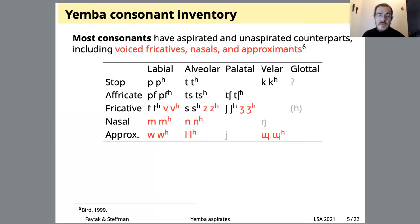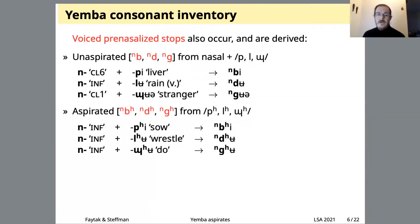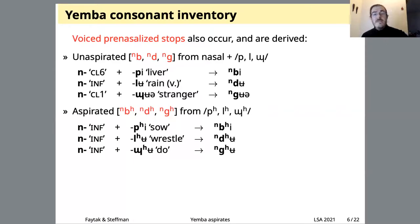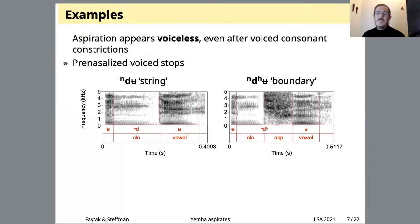There are no contrastively voiced stops, but voiced pre-nasalized stops do occur as allophones when a nasal prefix is concatenated with any one of these segments. We tend to analyze the aspirated stops as coming from the aspirated approximants and aspirated P and so on — there's good alternation evidence for this. If we look at some representative tokens of the voiced aspirates...